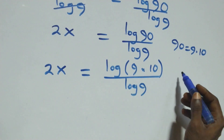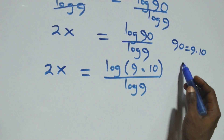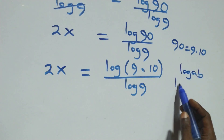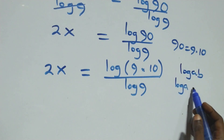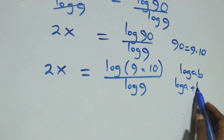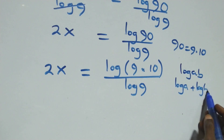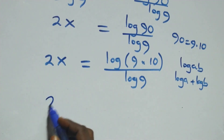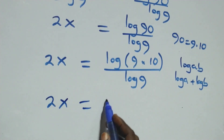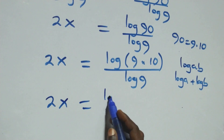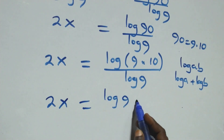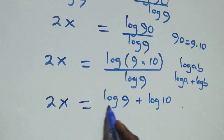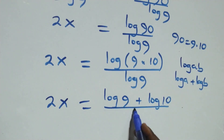Then here, this follows the law of logarithms. When we have log of a times b, this is the same thing as log a plus log b. That is, we can write this as 2x equals to (log 9 plus log 10) over log 9.